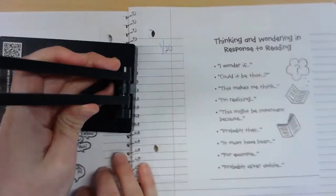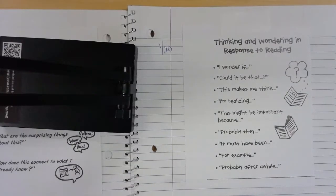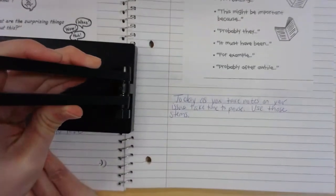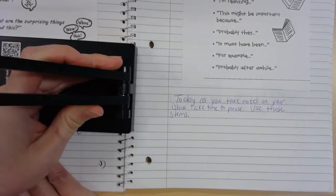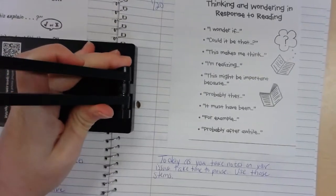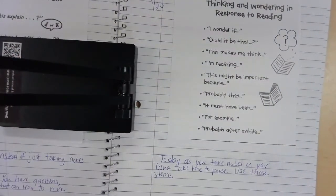The other handout that I want you to think about today is thinking and wondering in response to reading. And this is the same kind of thing. You aren't just writing down facts. You should be thinking about it as you're writing. So what I want you to do in your notes today is I want you to stop every so often and ask yourself to use at least one of these stems and jot it down. I wonder if, I'm realizing, it must have been. So you're writing down factual information, but at the same time, you're processing it.